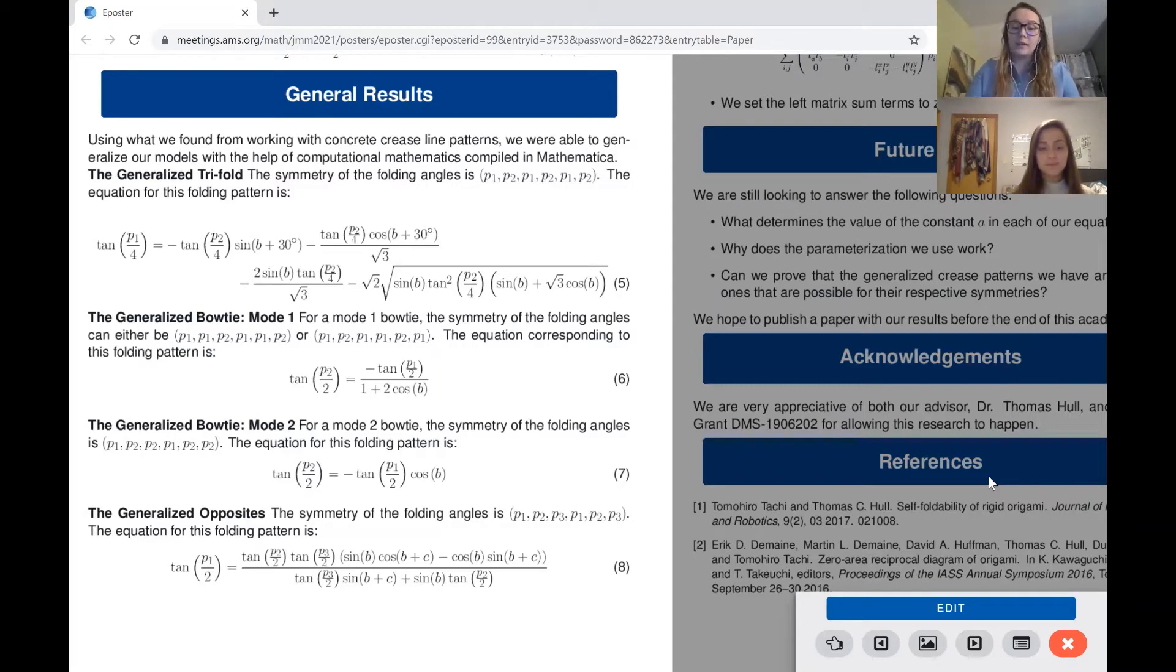Lastly, we found equation seven for the generalized opposites pattern, which relates to the rightmost crease pattern. This equation is a little different as it finds an algebraic relationship between p1, p2, and p3 based on angles b and c. So this time we have two different angles that could affect the equation.